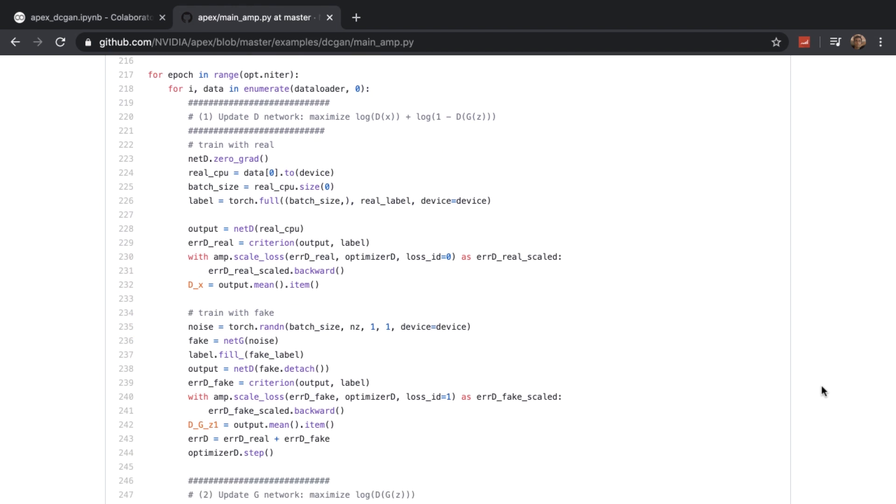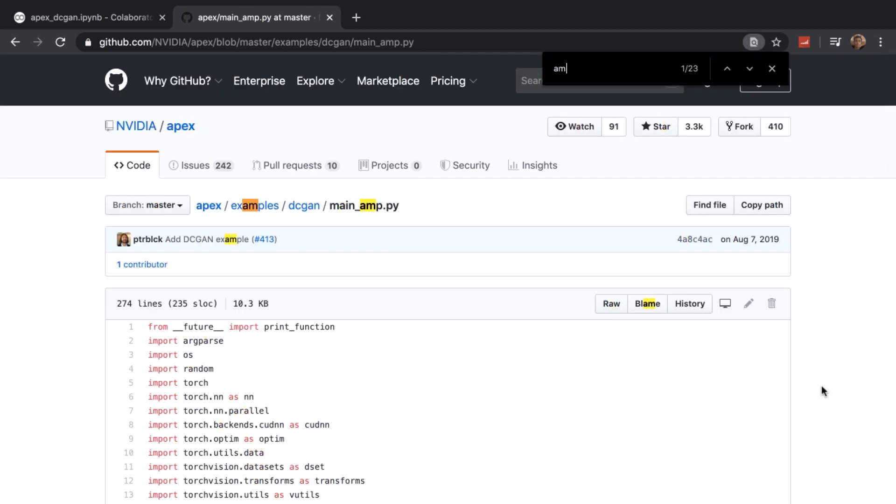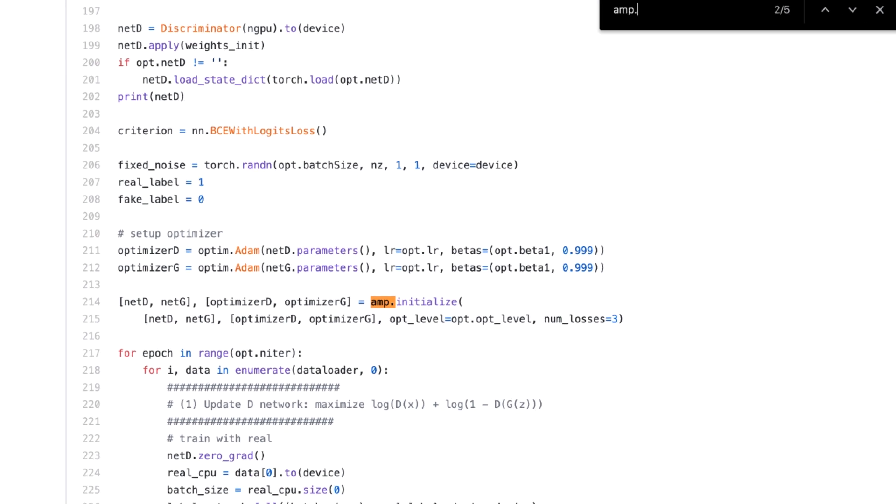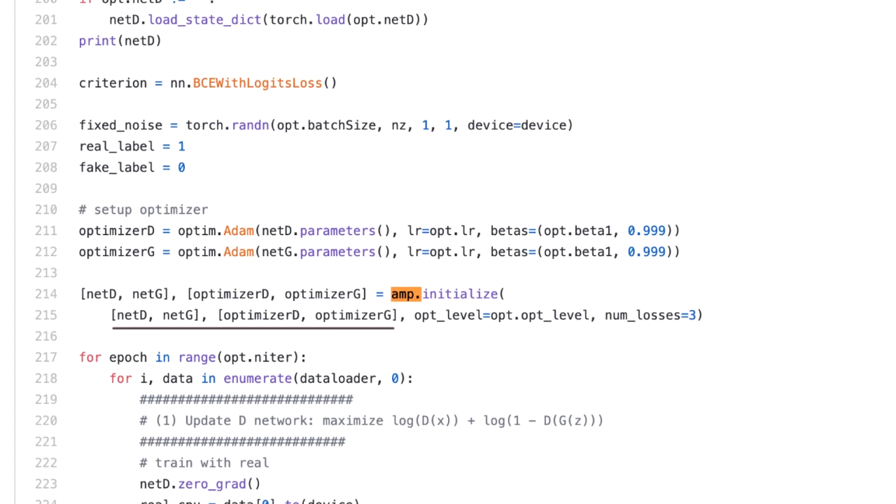But what did we add differently for incorporating mixed precision? Let's find that word amp followed by a dot on this page. Looks like we only have a few matches, so it's simple additions. We simply initialize Apex, giving it the generator and discriminator networks and their optimizers. It also has a num loss parameter to indicate the number of losses we have in the overall network. We specify this so that each loss can be scaled differently.